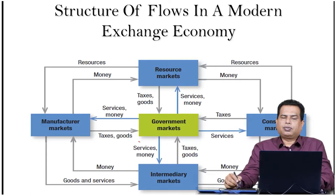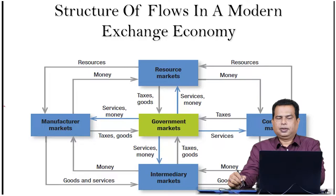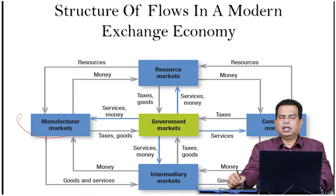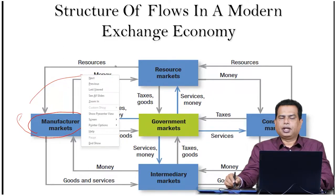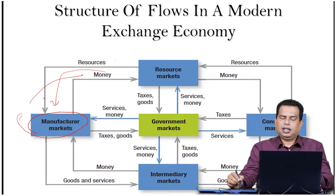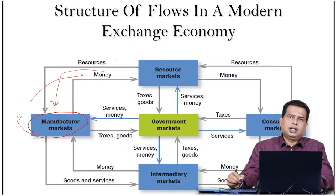This figure is going to tell us about the structure of flows in a modern exchange economy. We have manufacturers and markets. These manufacturer markets are going to send money to the resource markets, which provide resources — for example, labor and money involved in markets — as well as machines, technology, etc. These are being provided to the manufacturer.